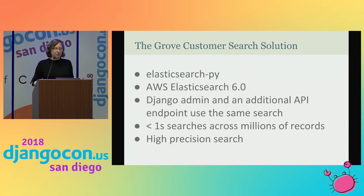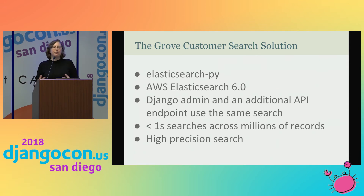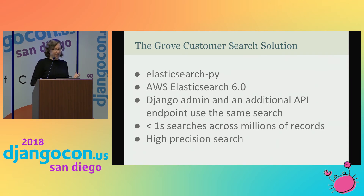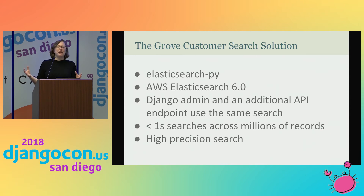Our final solution: we went with the lower-level elasticsearch-py to have parity with the website documentation. We finished on Elasticsearch 6.0 — we haven't had a reason to move to 6.4 simply because every time our data models change, version 6 does fine for us. Our Django admin uses the same search as an API endpoint that we have, so we achieved that goal and preserved our admin. Our searches are really, really fast — in fact, latency is the largest factor in our search speed; the Elasticsearch portion is hardly measurable. It's also very high precision. We replaced the amorphous full text search in Postgres with a high precision search engine that does a much, much better job of collating the records that we need.